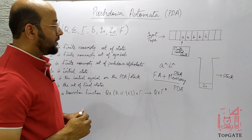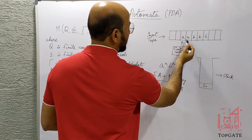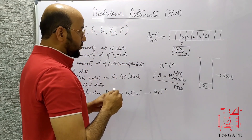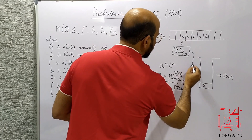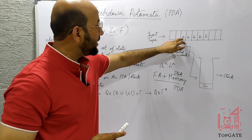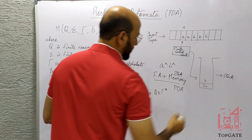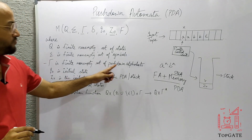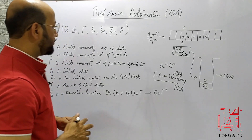Now, what is tau? Whenever we are reading the input string, the finite control unit reads it one by one. Sometimes there is a need to push some elements into the stack. It is not necessary to push only the element we are reading — if we are reading a, we can push a, or we can push some other element like x. Any element that gets pushed into the stack belongs to tau, the finite, non-empty set of push down alphabets.